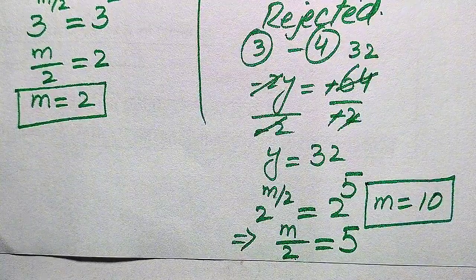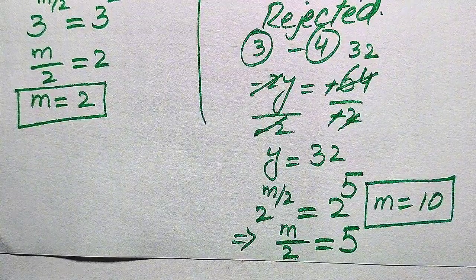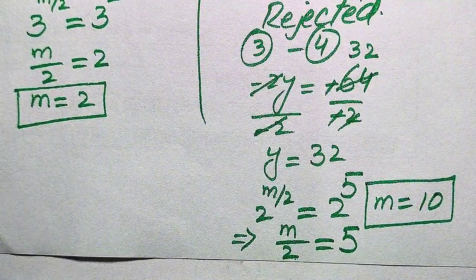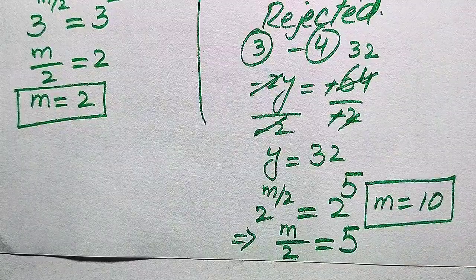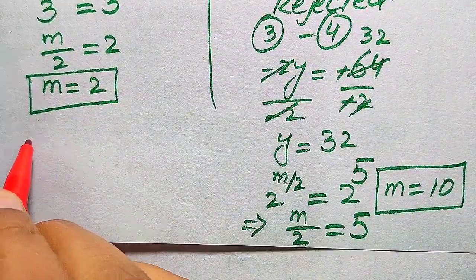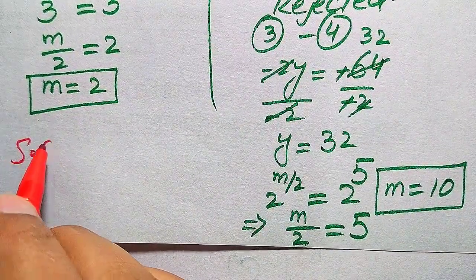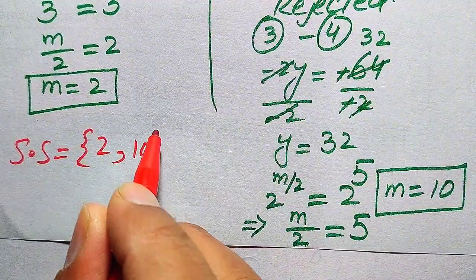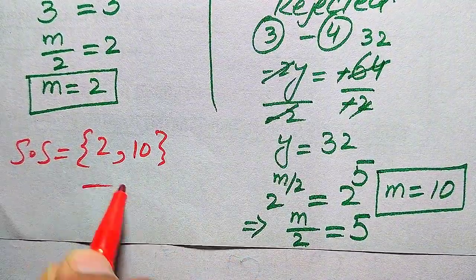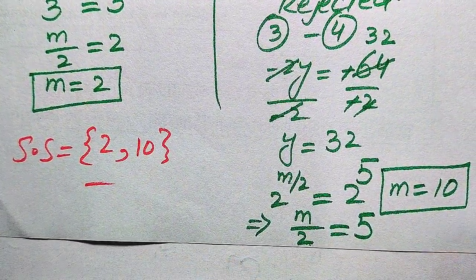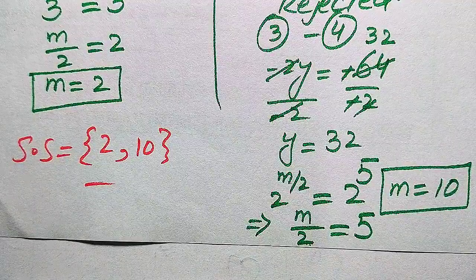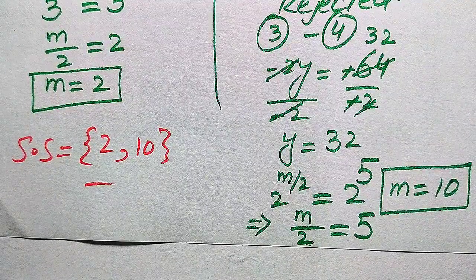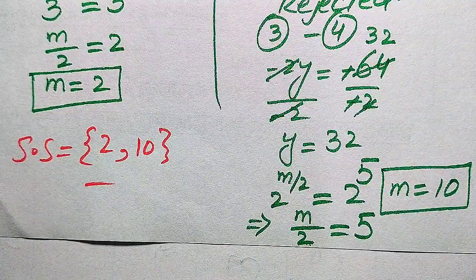Finally, there are two solutions to the given equation: m equals 4 and m equals 10. These are the two positive integer solutions. Thank you so much for watching this video — please subscribe to my channel for more exciting videos.